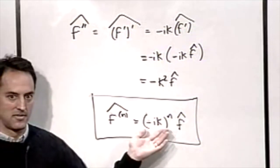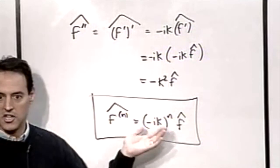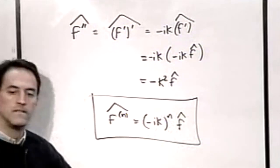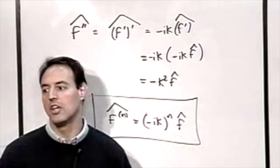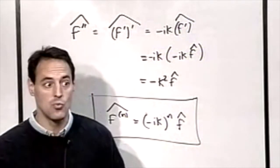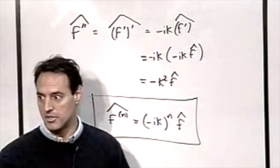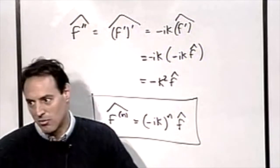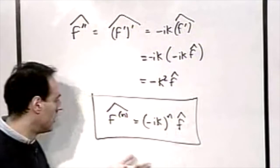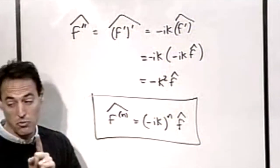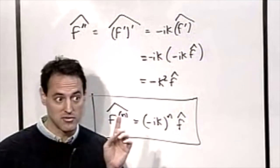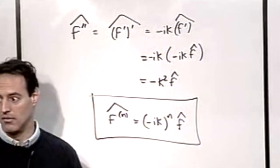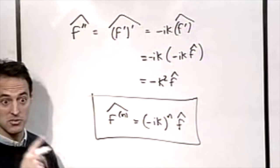That is the magic — this relationship is what makes the Fourier transform one of the most important methods developed for solving computational problems. Of the infinity of possible transformations you could apply, most will give you something you can't solve. The power here is this special property: it gives us a direct algebraic relationship for derivatives.